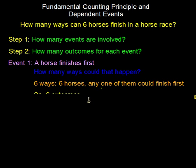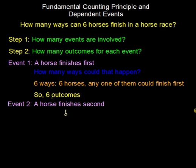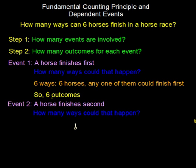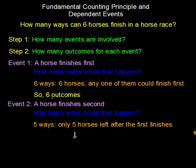Since there are six ways a horse could finish first, event one has six possible outcomes. What about event two? A horse could finish second. How many ways could that happen? I believe there are five possible outcomes, because after the first horse finishes, there are only five horses left. So event two only has five possible outcomes.